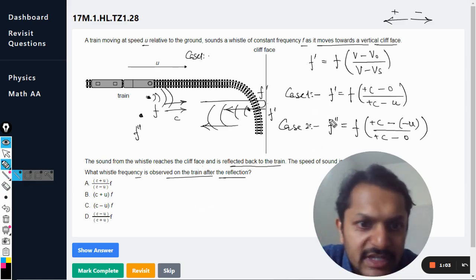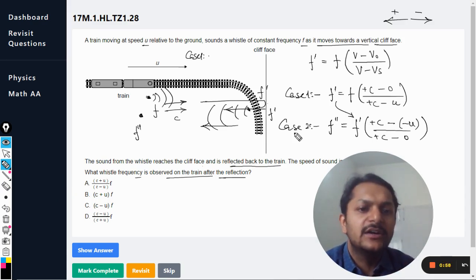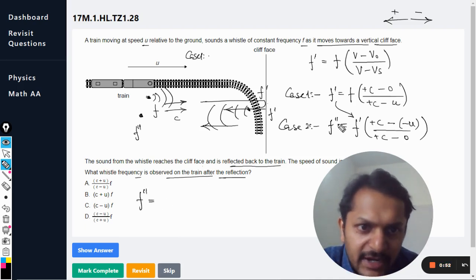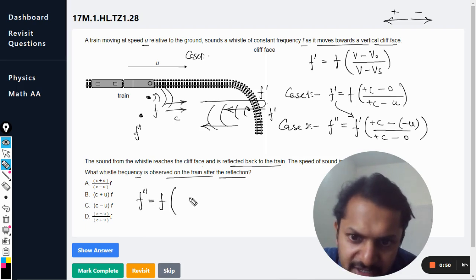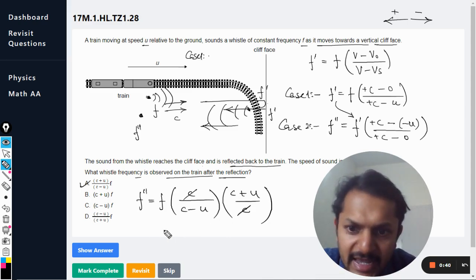So now this f, sorry, this will be f dash. So this f dash is now substituted here and we will find the new formula. So f double dash is f dash. I'm writing this now: f into c divided by c minus u into c plus u divided by c. Thereby c and c get cancelled out, and A is the answer.